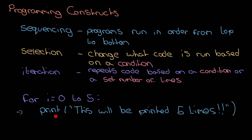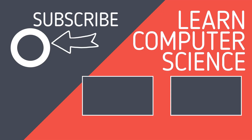So to summarise: sequencing is running code from top to bottom; selection uses if statements to choose what code runs based on a condition; and iteration repeats or loops code based on either a condition — condition-controlled — or a set number of times — count-controlled. Those are your three programming constructs.